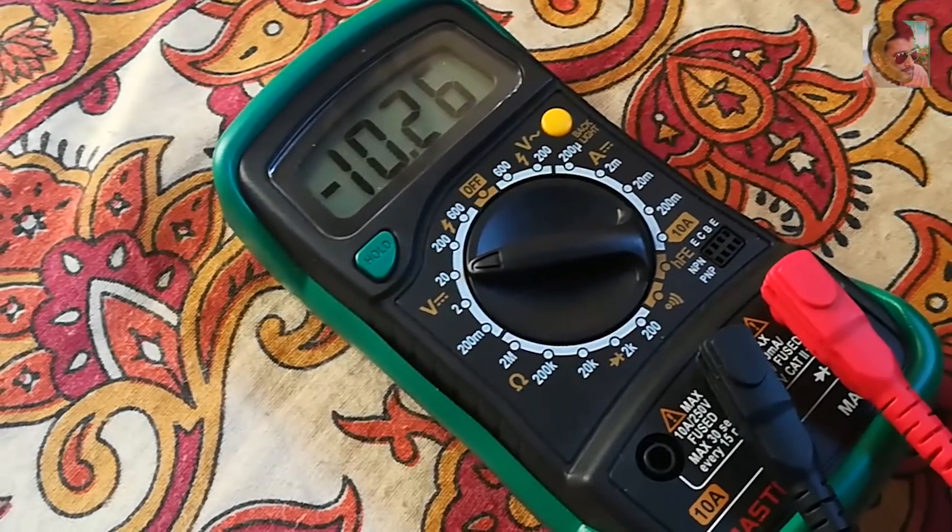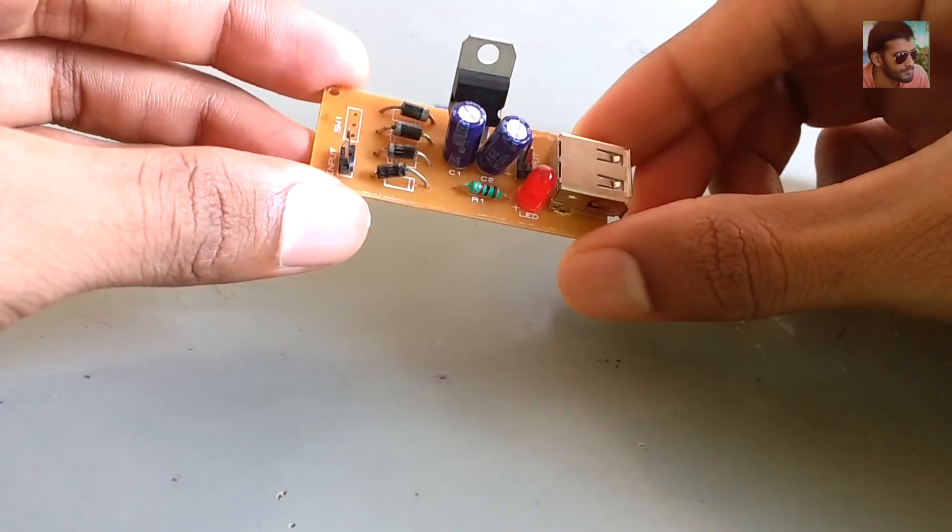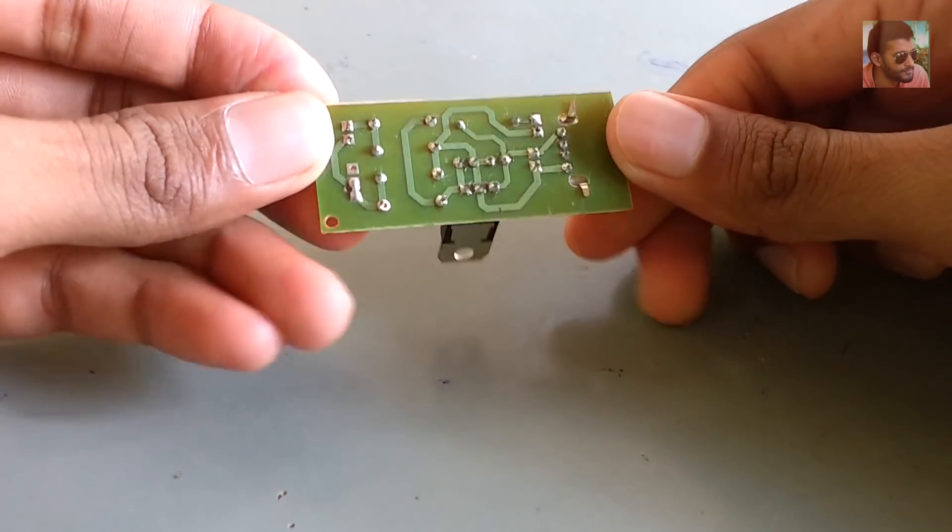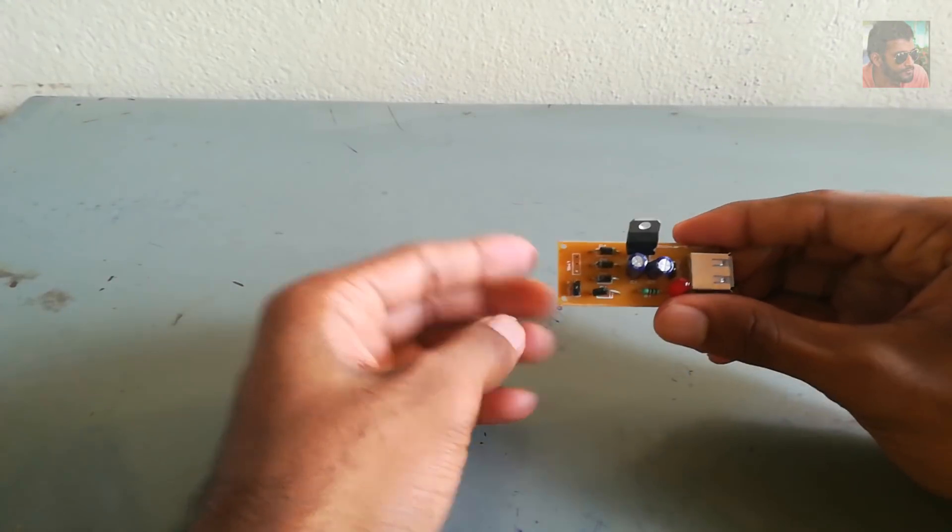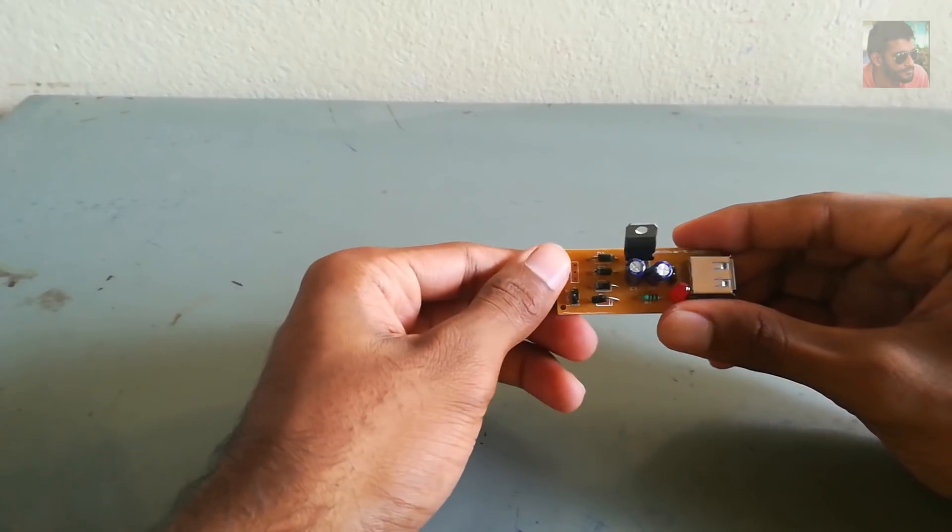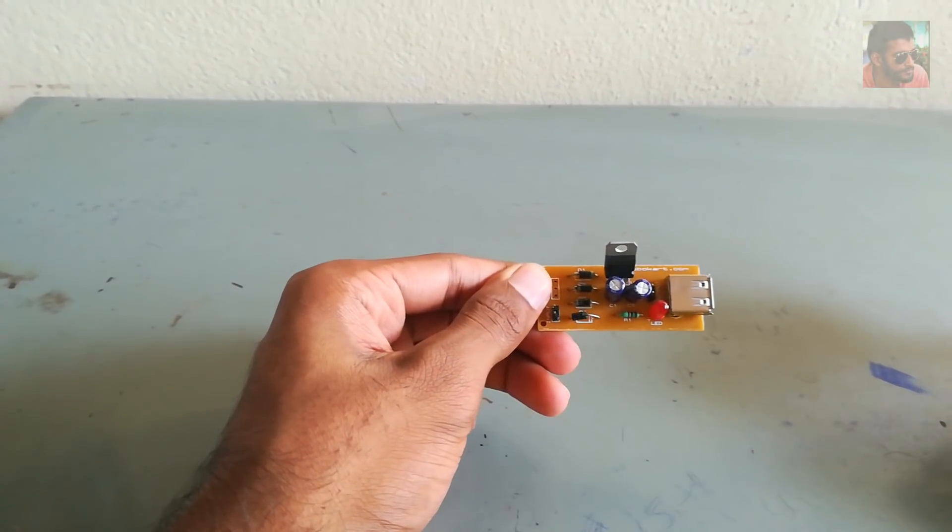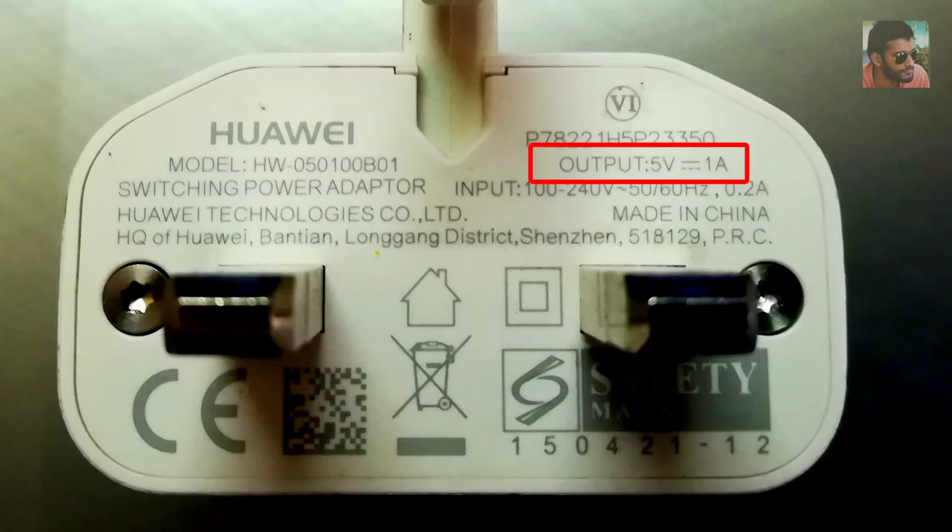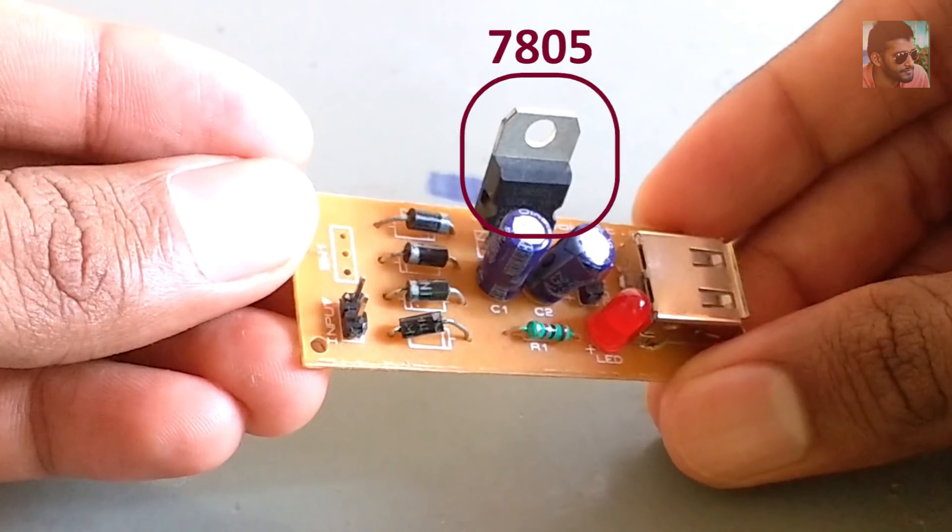Then I have a voltage regulating circuit here. When I give variable supply as input, I get a regulated output at this end. As most of our mobile batteries charge with 5 volts, in this piece of circuit I am going to use 7805 voltage regulator.